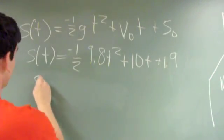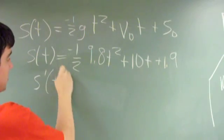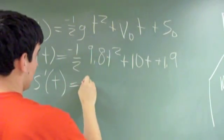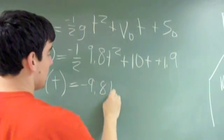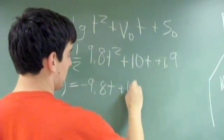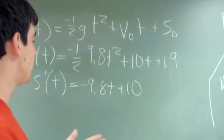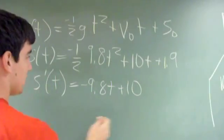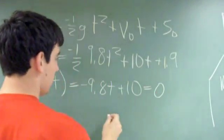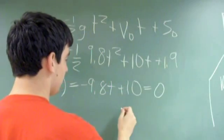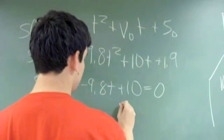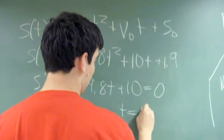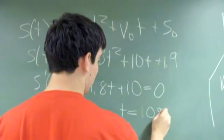So the derivative, S prime of T, would equal — bringing down the 2 — negative 9.8 T plus 10. To find the time of the maximum height of the basketball, we set the derivative equal to 0 and then solve the equation. T equals 1.09.